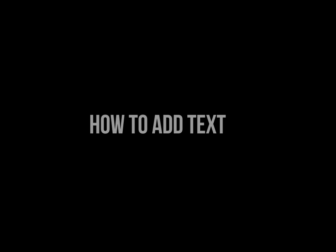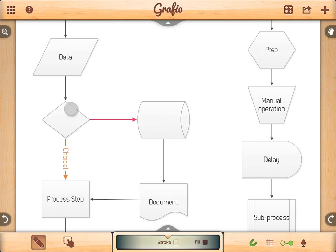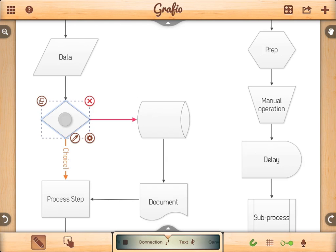How to add text. You can add text everywhere by double tapping. Let's try it. Double tap on this shape and start typing.